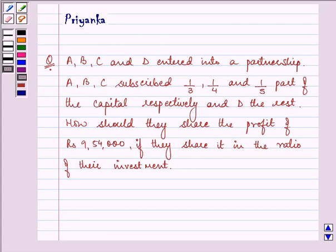Hello friends, how are you all today? The question says A, B, C and D entered into a partnership. A, B, C subscribed 1 by 3, 1 by 4 and 1 by 5 part of the capital respectively and D the rest.